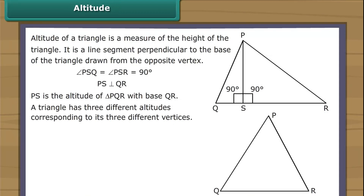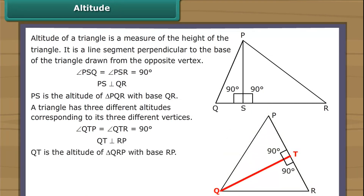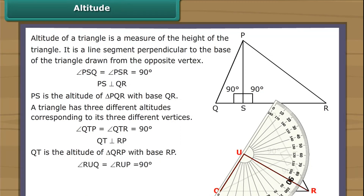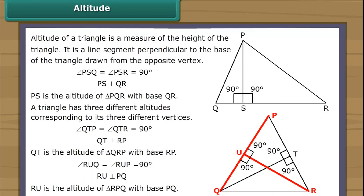We draw a line segment from Q perpendicular to RP at point T; it intersects RP at right angles. Therefore, QT is the altitude of triangle QRP with base RP. We draw another line segment from R perpendicular to PQ at point U; it intersects PQ at right angles. Therefore, RU is the altitude of triangle RPQ with base PQ.